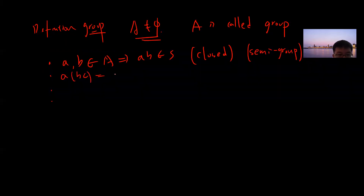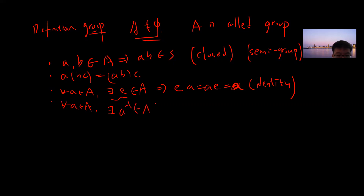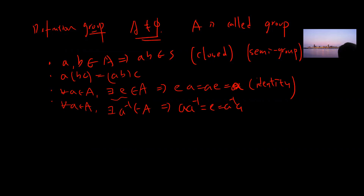The second property is associativity. The third is that there is a special element — the identity — which does not depend on other elements, such that ea = a = ae. The fourth is that for any element a in A, there is an inverse a⁻¹ in A such that a·a⁻¹ = e = a⁻¹·a. If all four properties hold, the set is called a group.